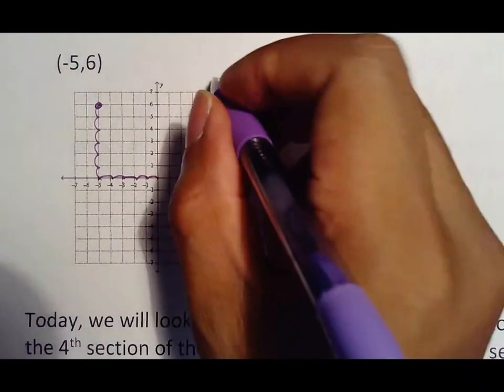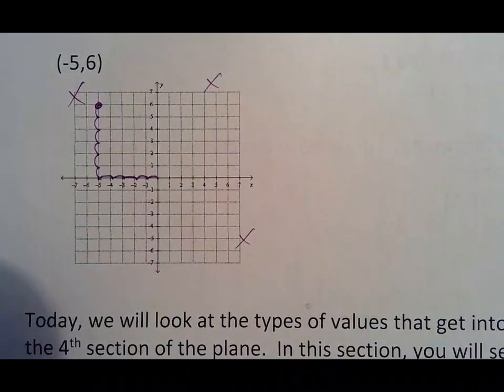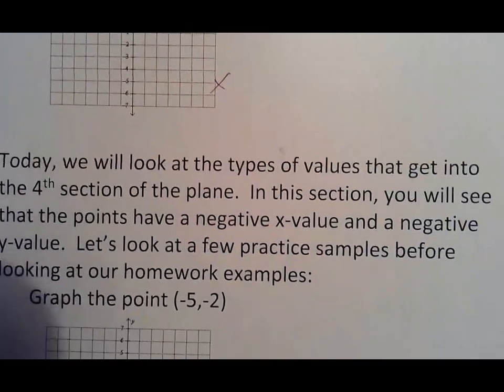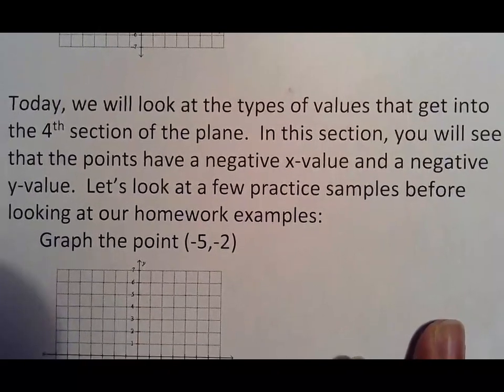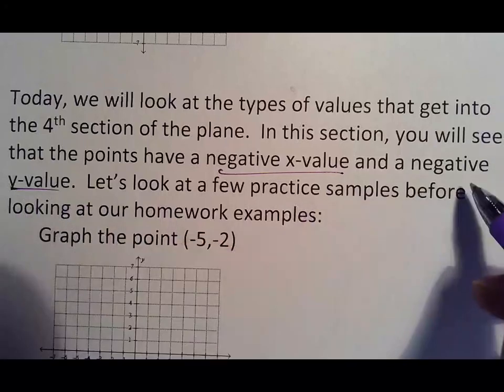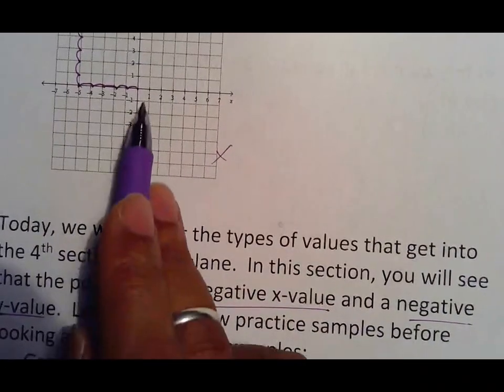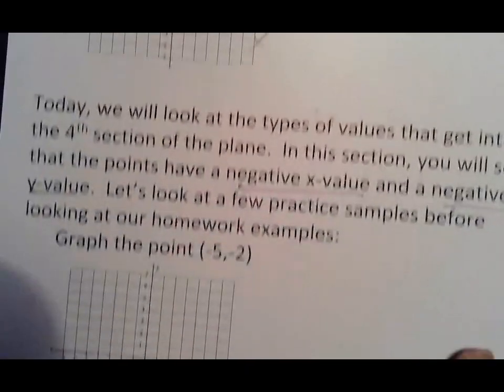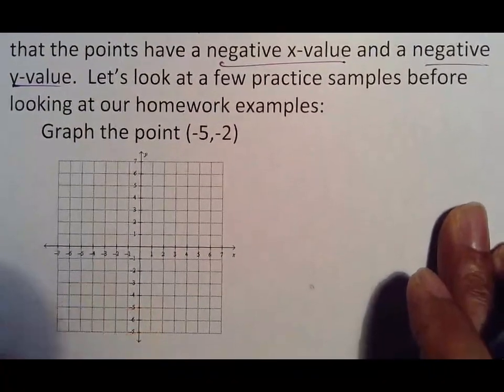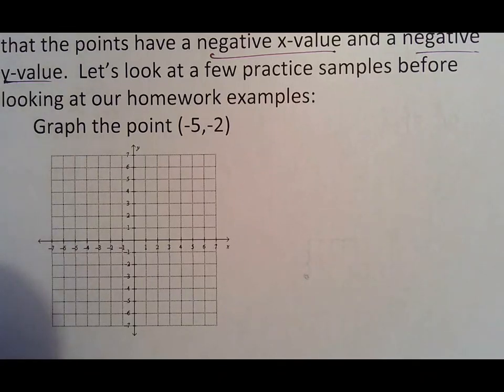So far we have seen this section, this section and that section which means today we are going to look at the types of values that will be a negative x value and a negative y value because that's the only way you get to this section here. Notice that would be backwards and down. So today we are going to throw those in as we kind of go through a couple of examples and then make sure you are ready to go before we get ready to take our test tomorrow.